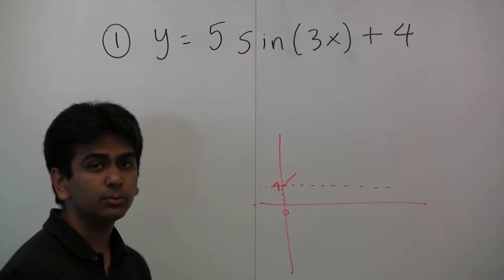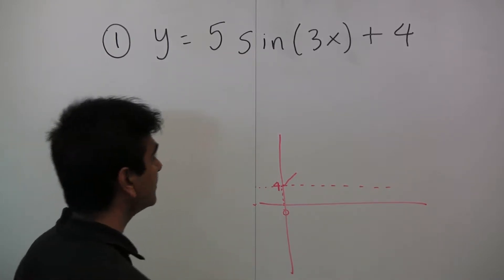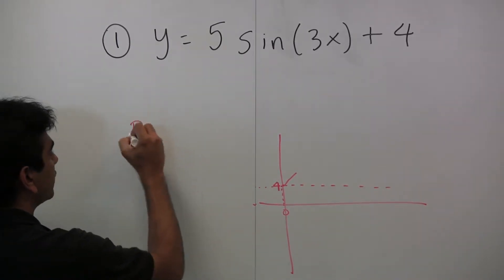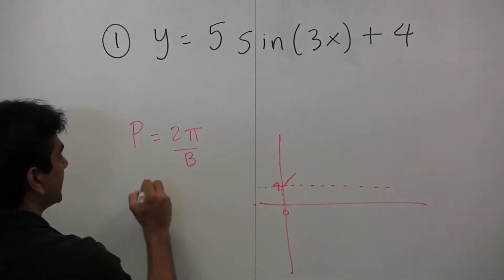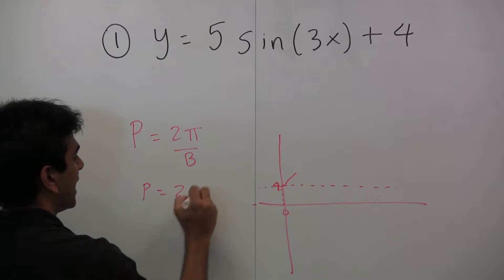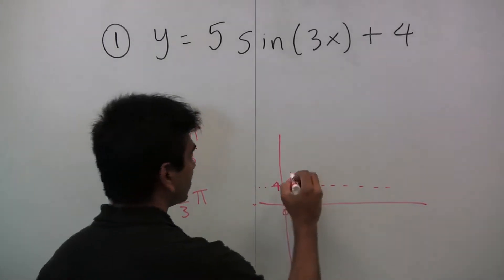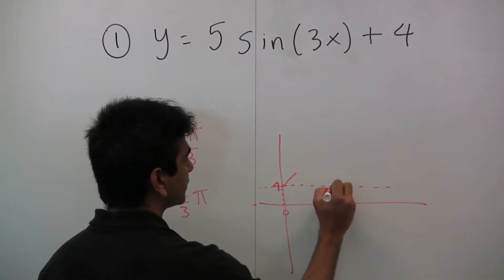Now, to find the period, we have to use b. b is 3, and from the previous video, we know that the period is 2π over b. Since b is 3, the period will be 2π/3. This means that this function will repeat itself every 2π/3 unit.